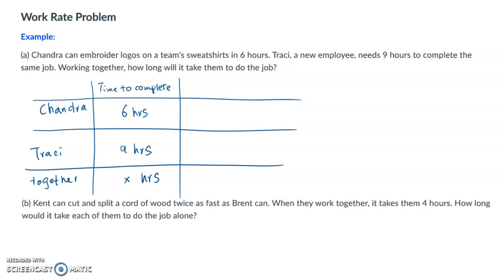So how do we set up? We will approach this problem by using the concept work rate. Since it takes Chandra six hours to complete the job, let me draw a little graph here: one, two, three, four, five, six. So this is the whole job. For each hour, Chandra will complete one-sixth of the whole task. We have six one-sixths add up together that's the whole job. So the work rate for each, that will say per hour, Chandra will complete one-sixth of the whole task.